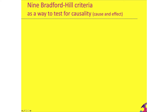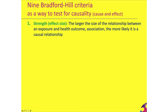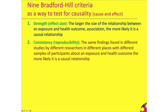One way we can test for causality is to use Bradford Hill's nine criteria. First, strength — the larger the effect size of the relationship between the exposure and health outcome, the more likely it is a causal relationship. Second, consistency or reproducibility — the same findings found in different studies by different researchers in different places with different participants; the more often studies show the same thing at different times and in different places, the more likely the relationship is true.